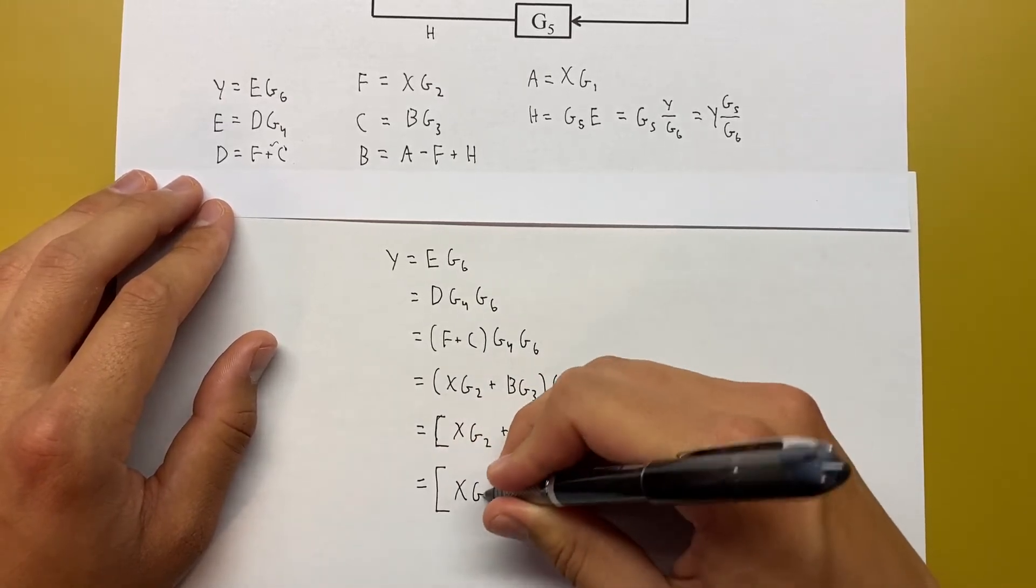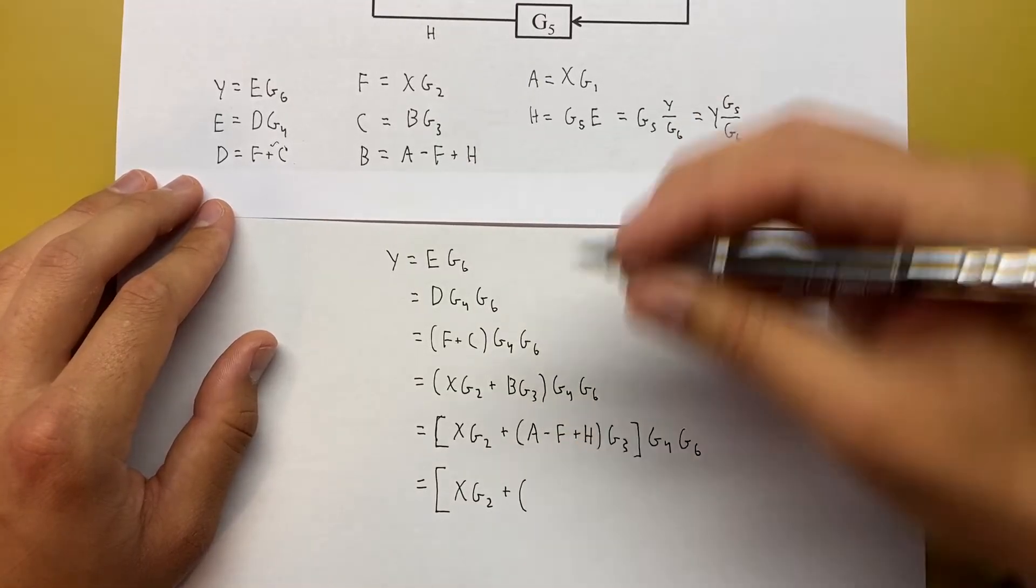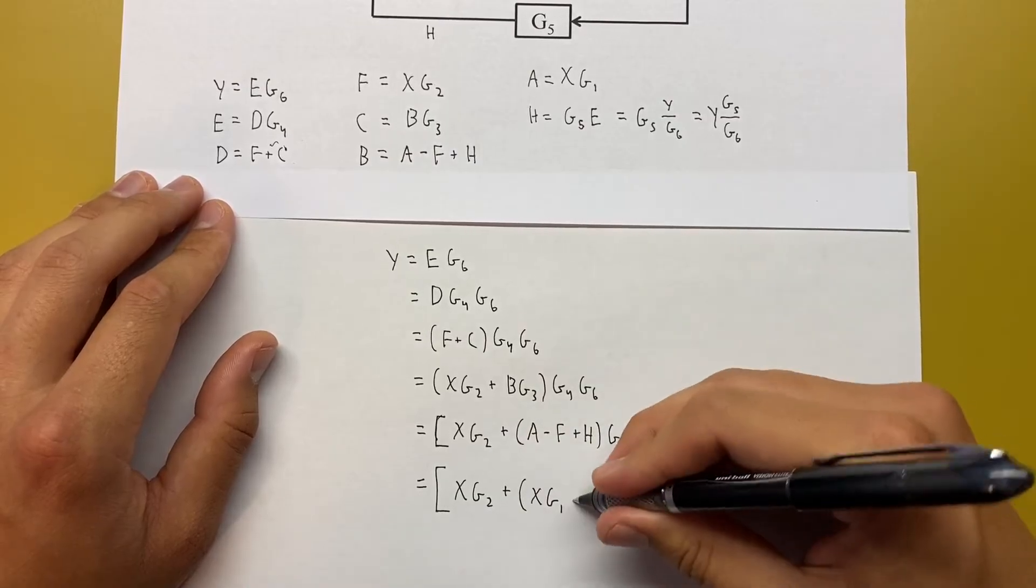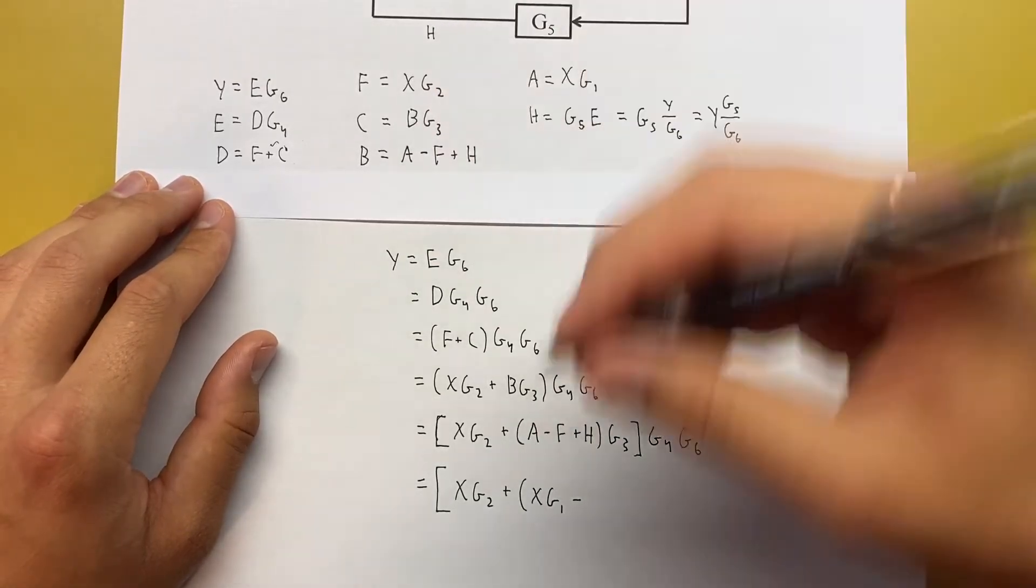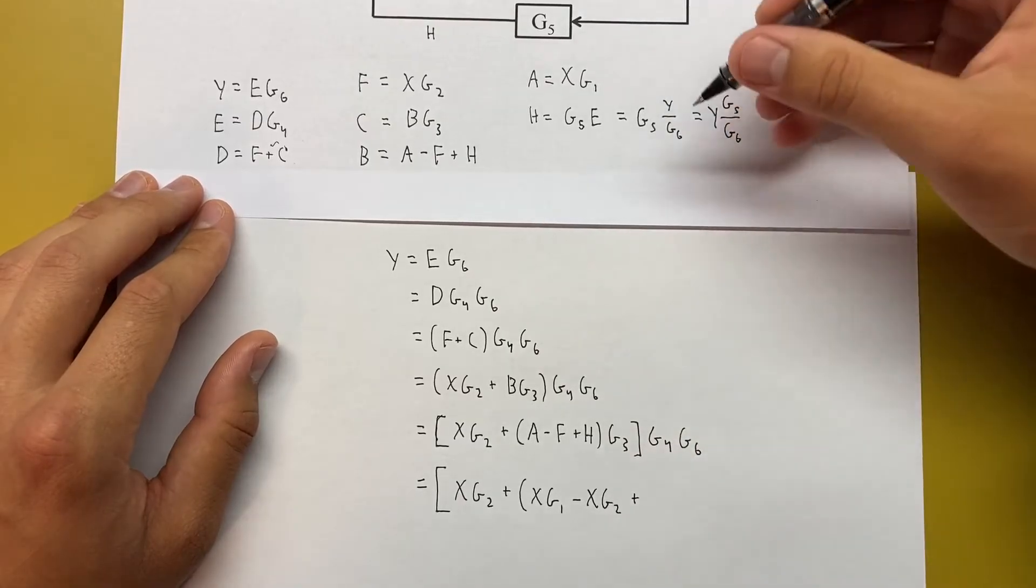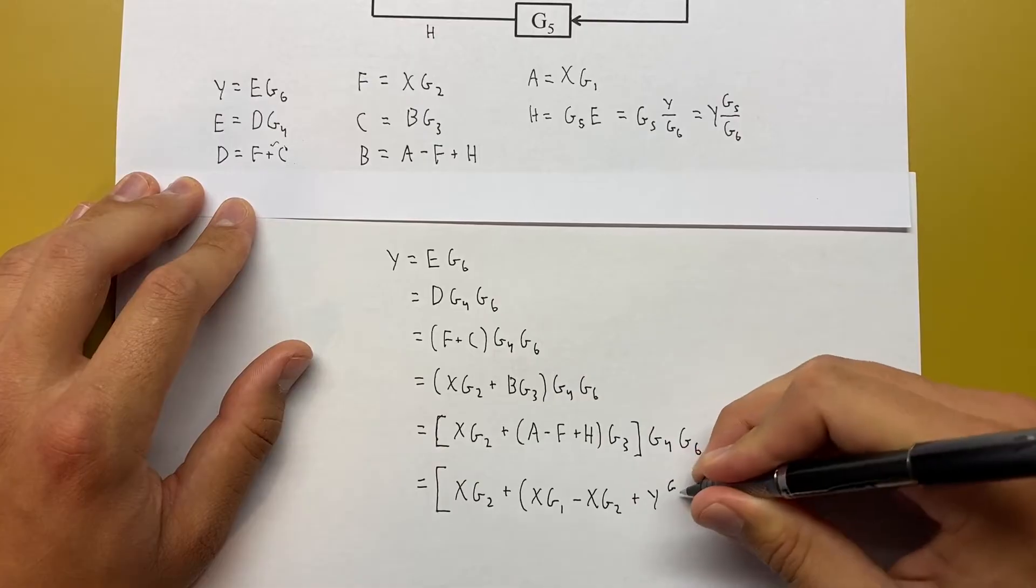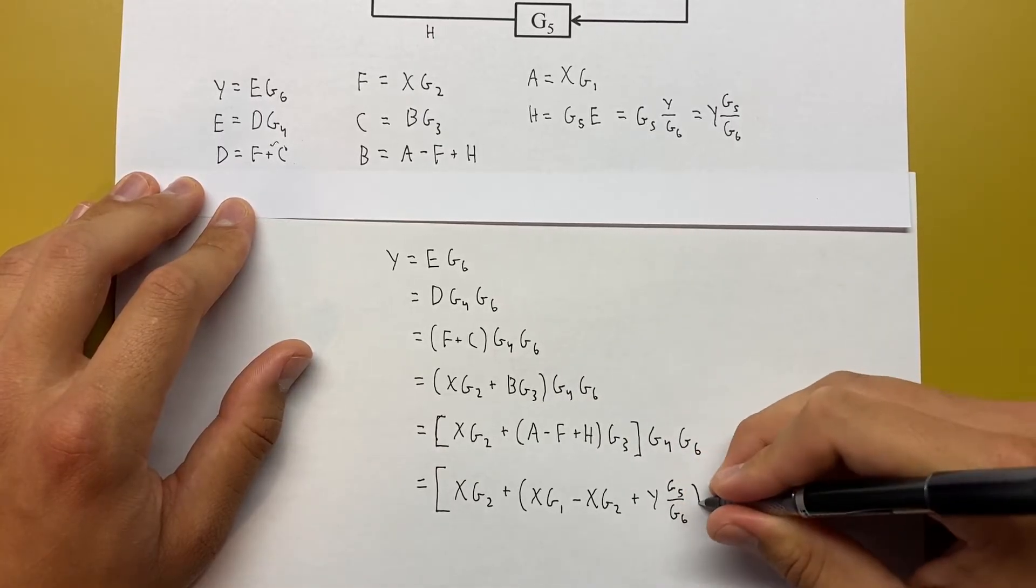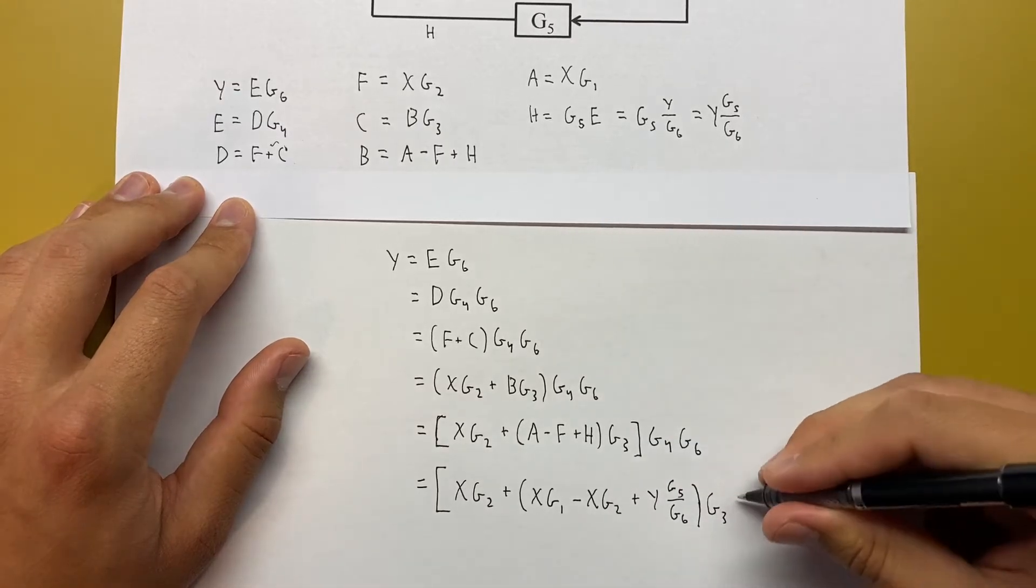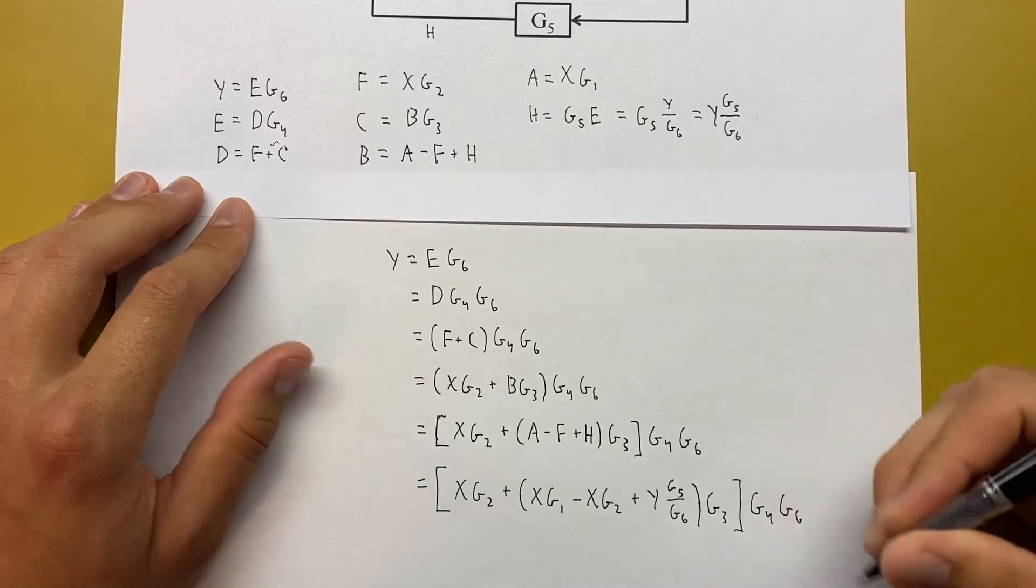We'll have X G2 plus A is going to be replaced by X G1 minus F is going to be replaced by X G2 plus H is going to be replaced by Y times G5 over G6. And then we'll have G3, close bracket, G4, G6.